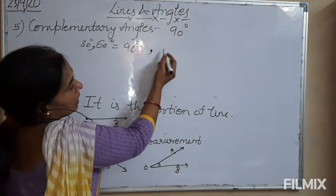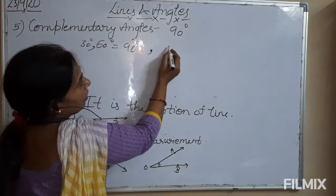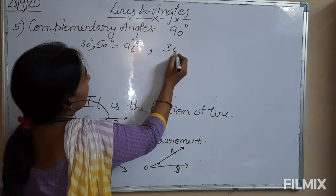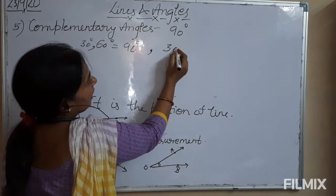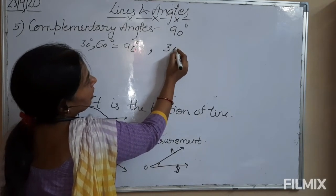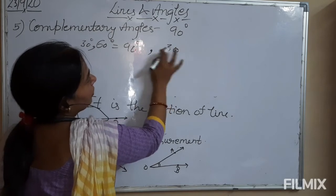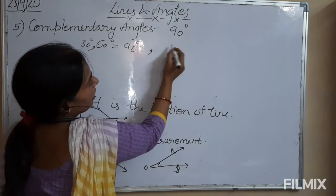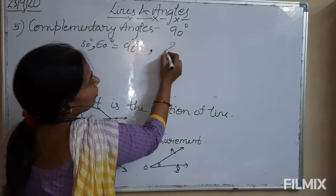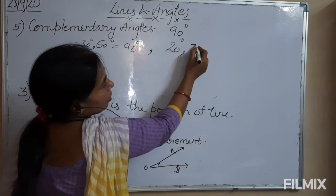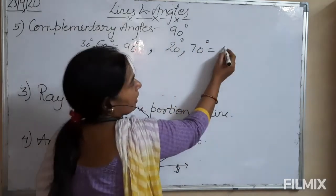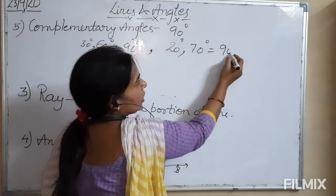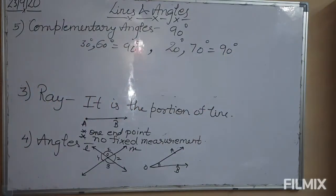Let us look at another example. Suppose the first angle is 20 degrees. So its complement is 70 degrees. The sum of these two angles is 90 degrees. So here we can say the two angles whose sum gives us 90 degrees are our complementary angles.